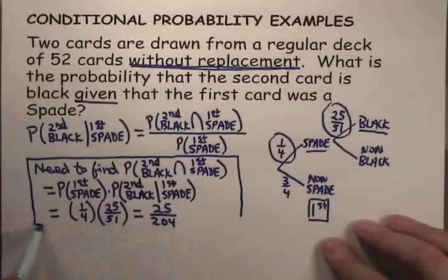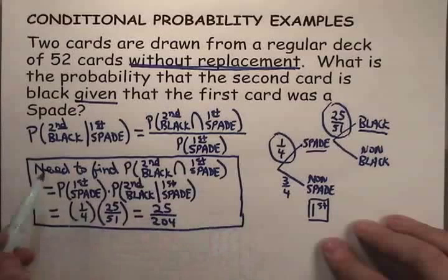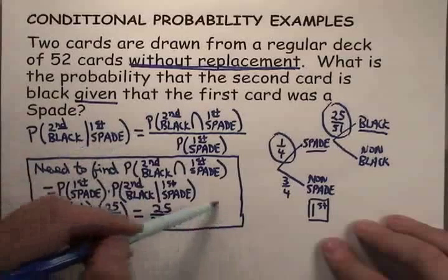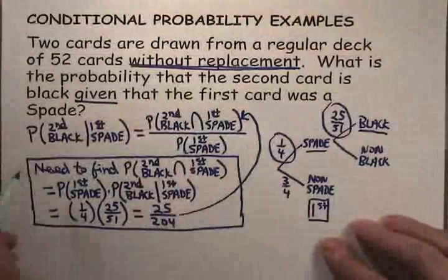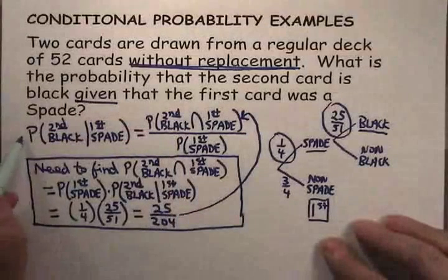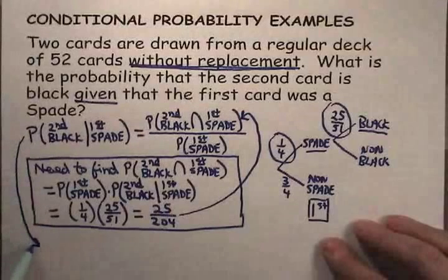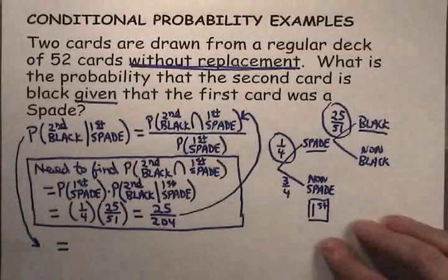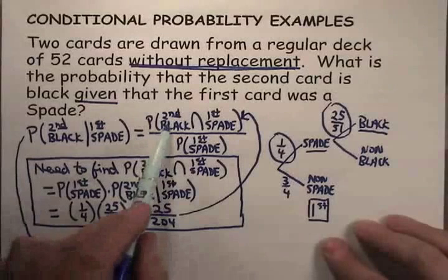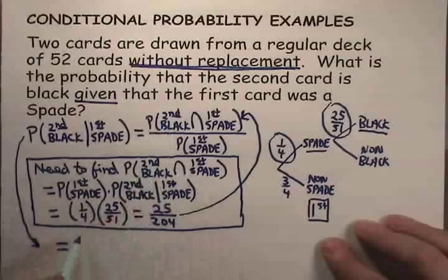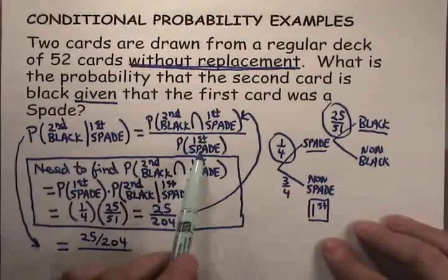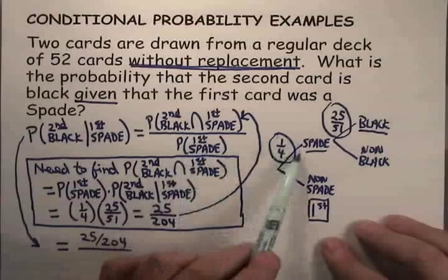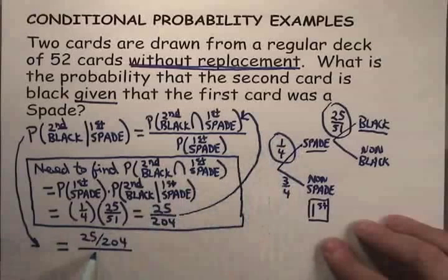Remember, we had to do this calculation off to the side. This is the numerator of the answer we're looking for. To go back to the original problem, that conditional probability is 25 over 204 divided by the probability that the first one was a spade, which we can read right off the tree diagram, is 1/4.